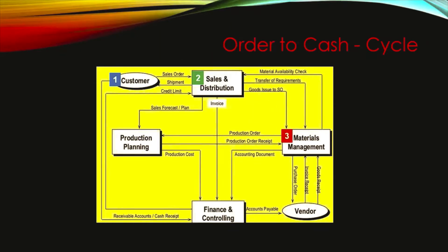The third step is Material Management. To manufacture the laptop we need raw materials, so the MM module will do some planning. If we need raw materials — say motherboards, hard disks, screens — and we don't have enough stock, the MM department will place a purchase order to the vendor to deliver those raw materials. Step number four: the vendor receives the purchase order and supplies the raw material. Step number five is Production Planning.